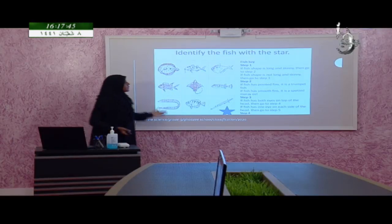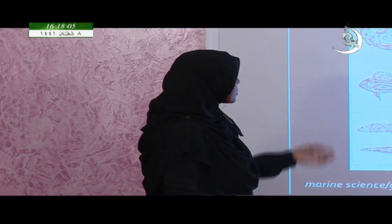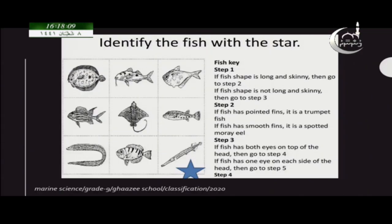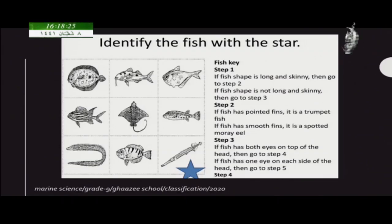In this example, the first question is: if fish shape is long and skinny, go to step two — because some fishes are long and skinny while others are not. Only two fishes have a long and skinny body. The others need to go to step three.